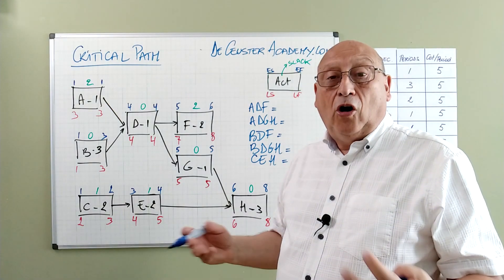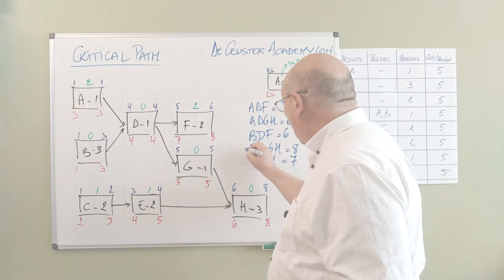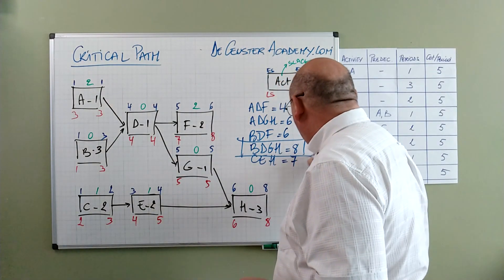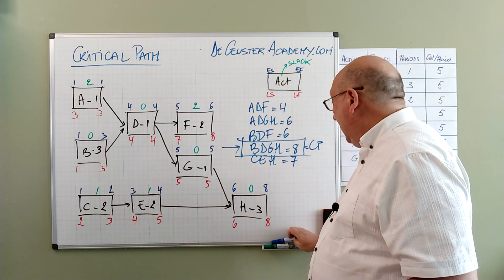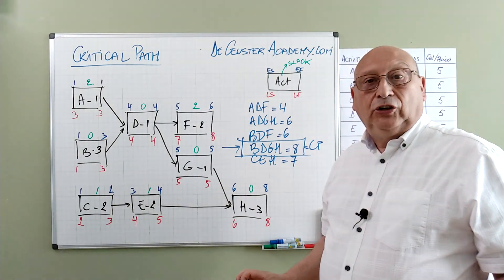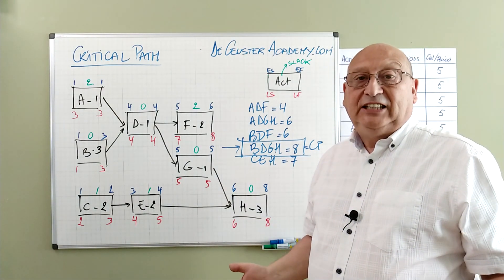By adding the duration of all the activities. So this is in fact the longest path. So this is the critical path. The path B D G H with a duration of eight periods is the critical path.